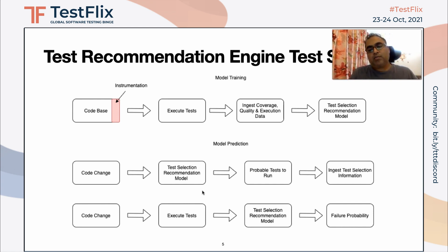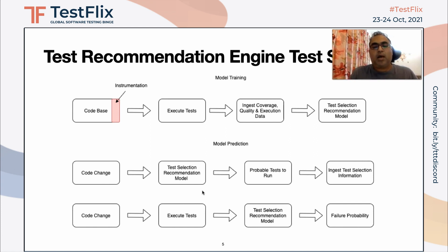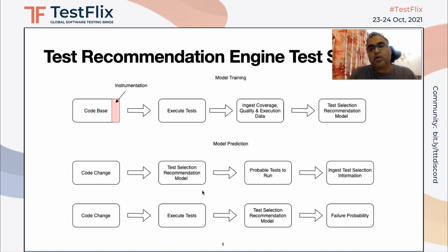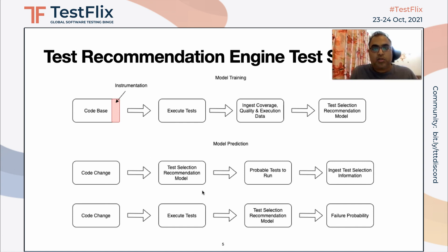There is another way for prediction through the engine: if there is a code change, you execute the tests as you did in the model training and then pass the information to the test selection model. It will then tell you the failure probability of those executed tests, and that is how you can see if those tests are actually the ones that should be in your regression pack. You can always connect with me to get a more heuristic and detailed approach on how to create this.